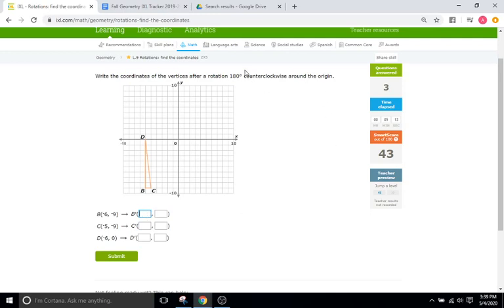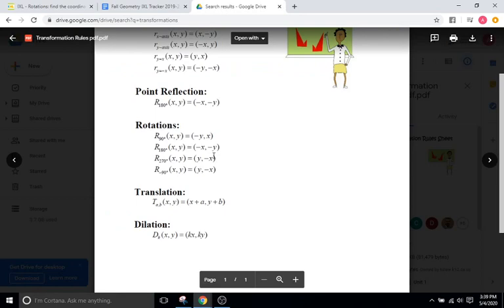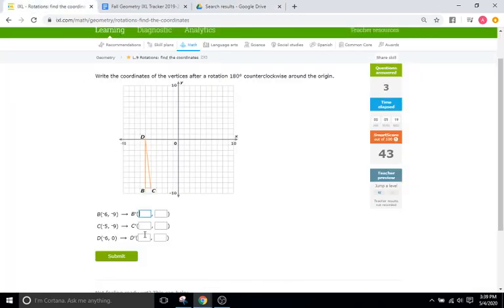Let's see. So it's 180 degrees counterclockwise. So remember, we're just going to flip the signs, right? We're going to keep x and y in the same place, but just flip the signs for both. So negative 6 negative 9 becomes positive 6 positive 9. Negative 5 negative 9 becomes positive 5 positive 9. And negative 6 comma 0 becomes positive 6 and 0.